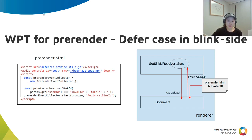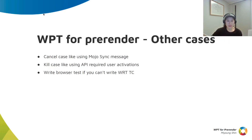There is no difference from a WPT test perspective. If the feature uses a mojo sync message during pre-rendering, we do canceling. And if a feature that requires user activation is called, we kill the renderer since it is unexpected. We can also consider writing it as a browser test if it is difficult to write a WPT test.